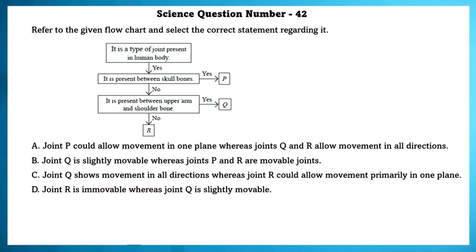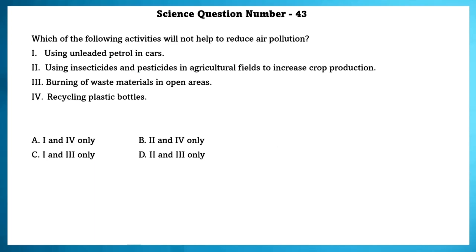Science question number 42. Refer the given flowchart and select the correct statement regarding it. The correct statement is that joint Q shows movement in all directions, whereas joint R could allow movement primarily in one plane. Science question number 43. Which of the following activities will not help the air pollution? Second and third option of activities will not help reduce the air pollution.